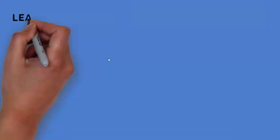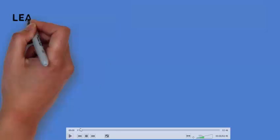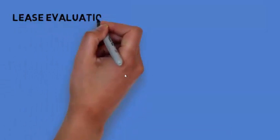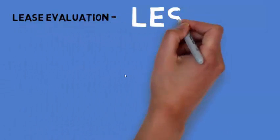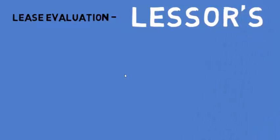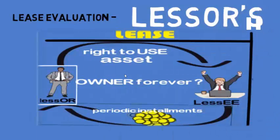What is a lease? A lease can be defined as the owner of the asset — that is the lessor — giving the right to use of an equipment or capital good to the lessee in return for periodic installments. Now how will the lessor evaluate whether the lease will yield a positive NPV or not?